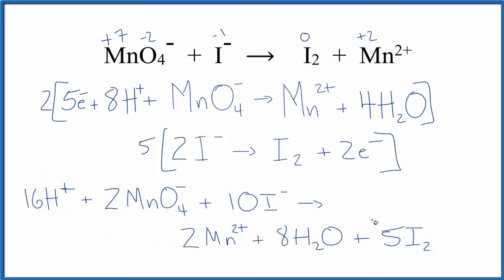So this is the final balanced redox reaction and we can check our work. If you add all the charge up over here, sixteen plus two minus ten minus, this gives us a four plus here. Two times two plus is four plus. If you count the atoms up they're the same as well. This is Dr. B with the balanced redox reaction for MnO4 minus plus I minus yields I2 plus Mn2 plus. Thanks for watchin.